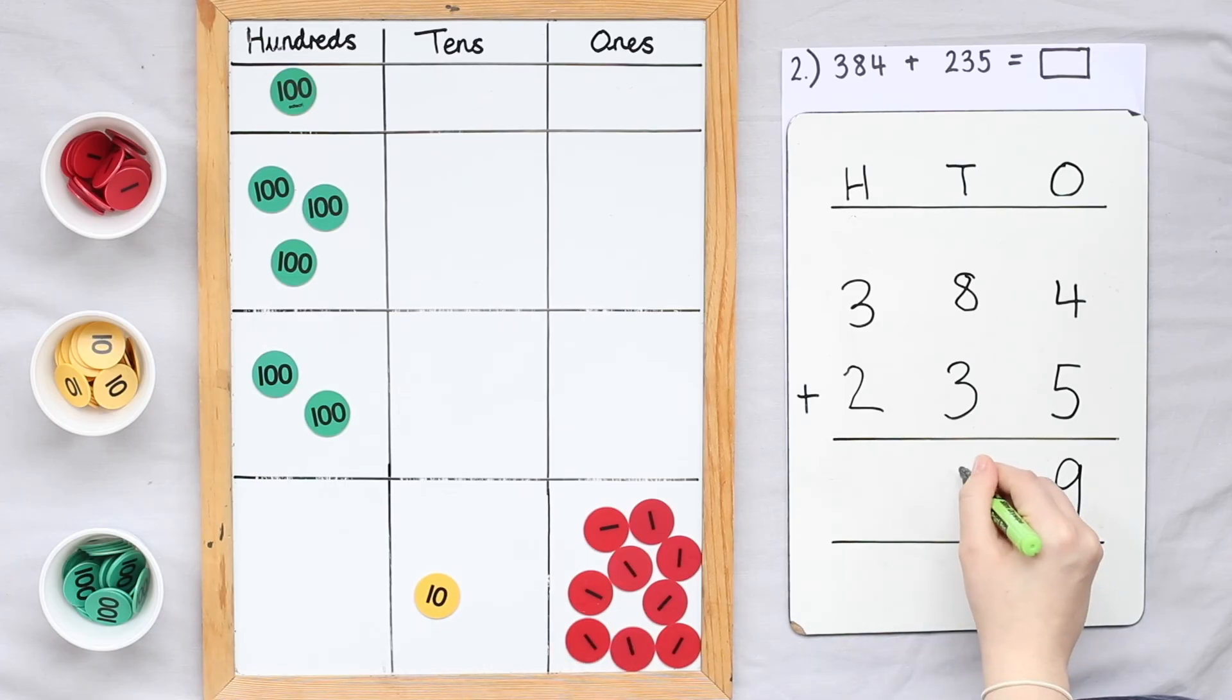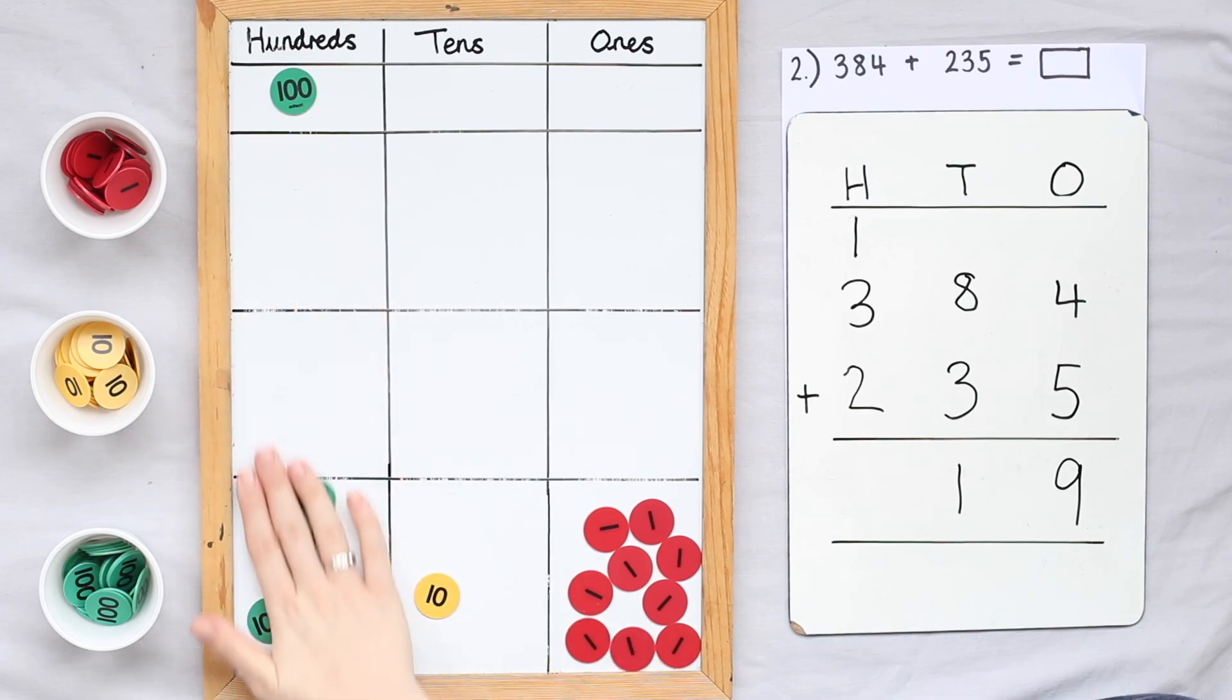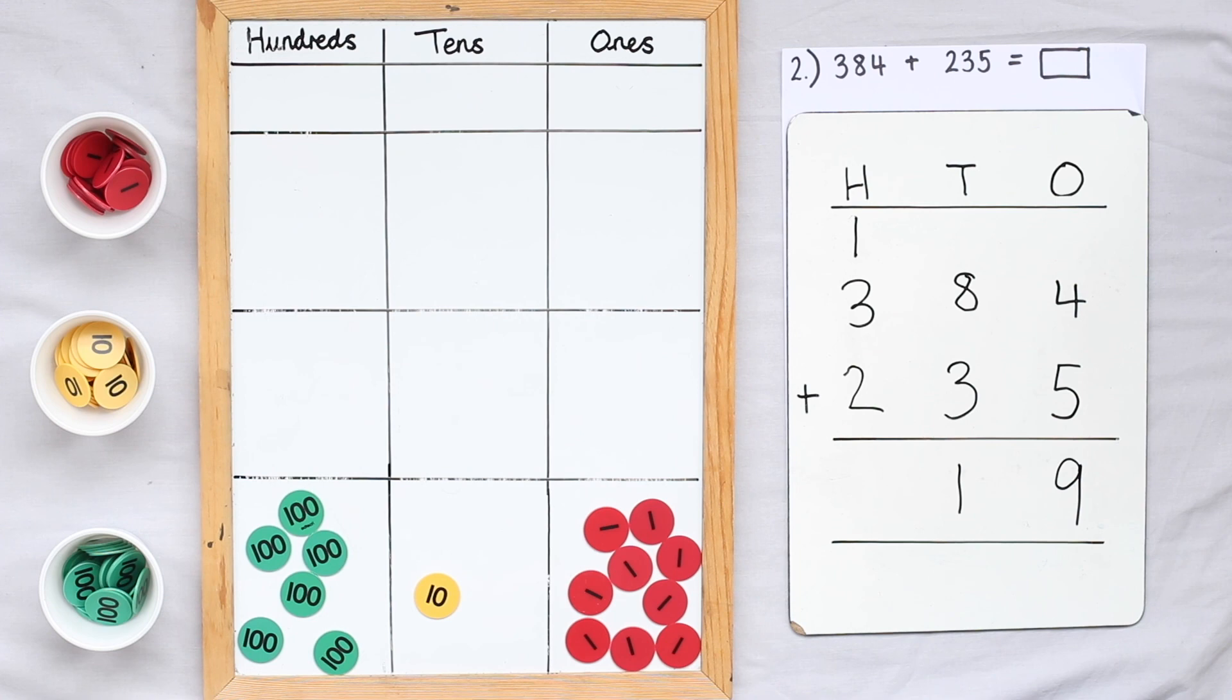I now have one ten left in my tens column and one hundred in the hundreds column. Now I can add together my hundreds, not forgetting the one hundred I've placed at the top. One hundred add three hundreds add two hundreds is six hundreds. Altogether I have six hundred and nineteen.